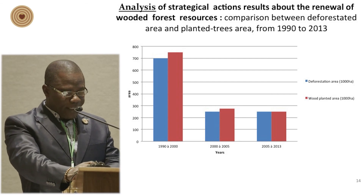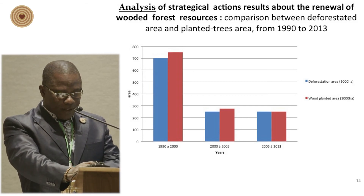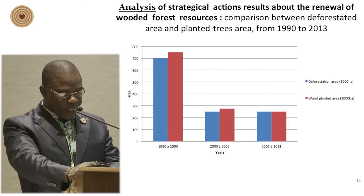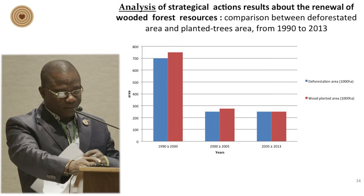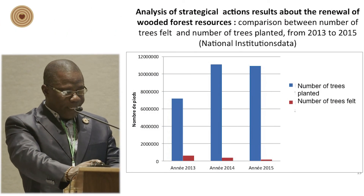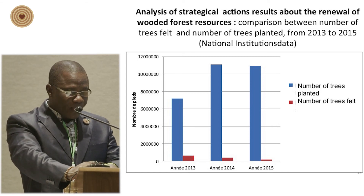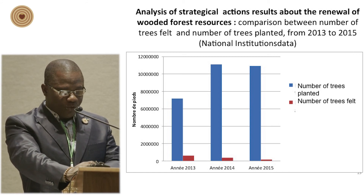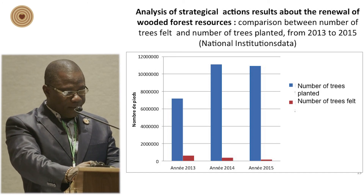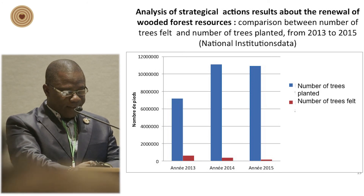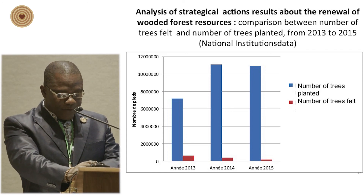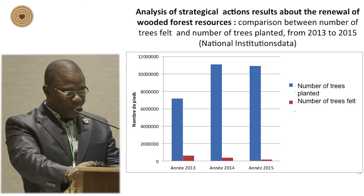Globally, it indicates that the area covered by planted trees exceeds the one lost to deforestation. In the same line, from 2013 to 2015, as this graphic shows, the number of trees planted is at least ten times more important than the number of trees felled, according to available data.